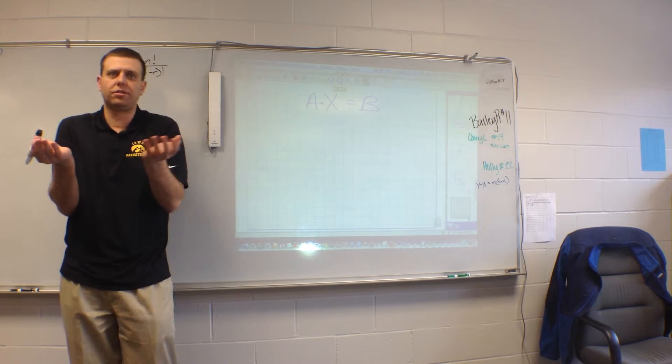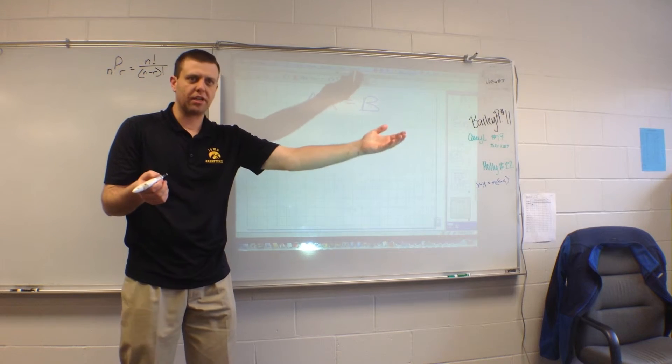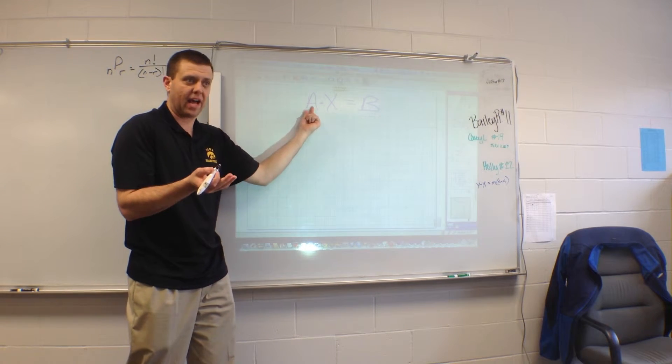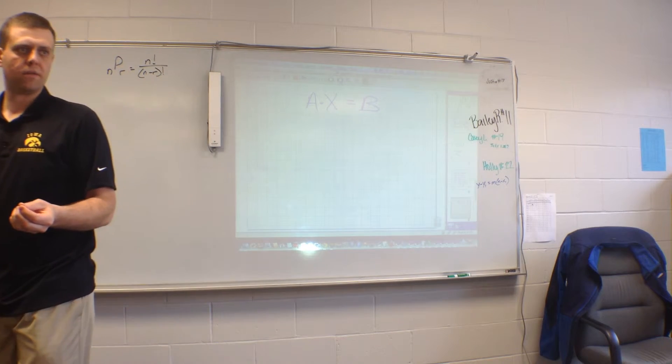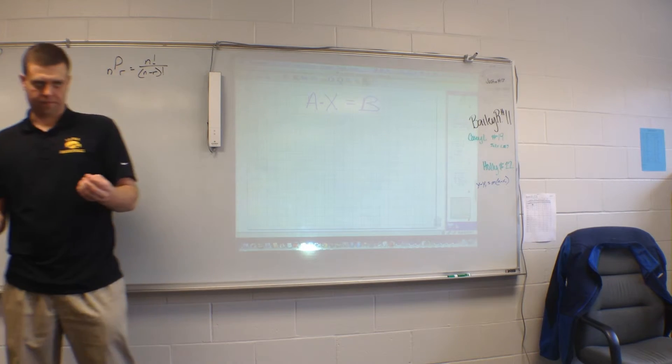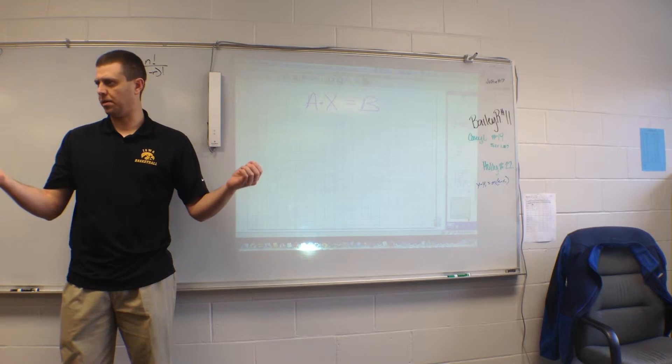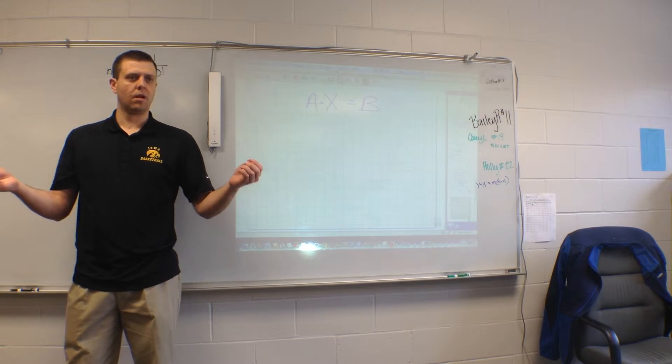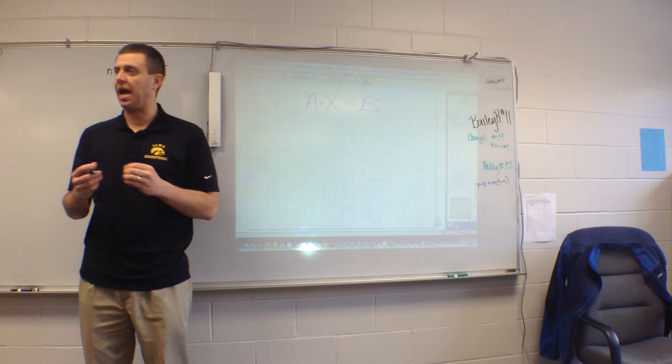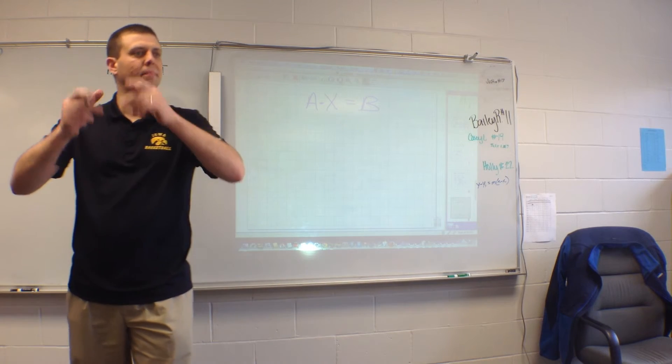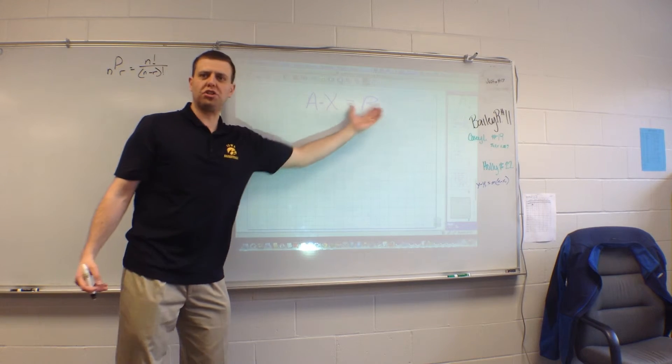Now, if these were numbers, if it said 5 times X equals 30, if they were numbers, you would just say divide by 5, right? These are matrices. So you multiply both sides by the inverse of the one you're trying to get to the other side. Can you divide matrices? No. Well, technically you are. Technically you are, because dividing is really the exact same thing as multiplying by an inverse.